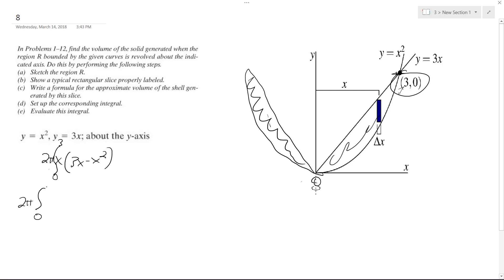So we get 2π, integral from 0 to 3, of 3x squared minus x cubed dx.